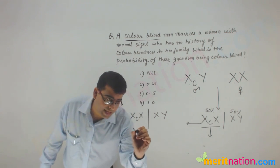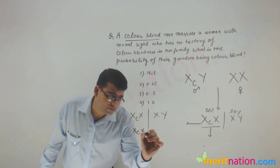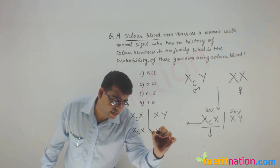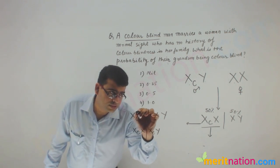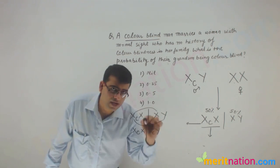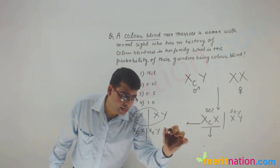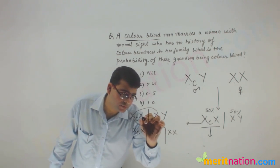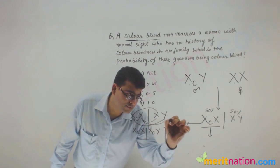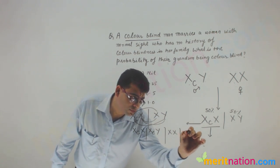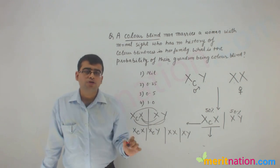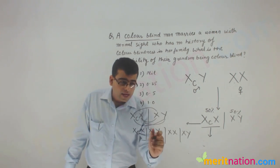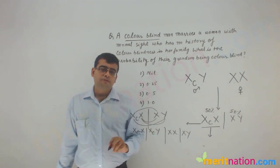We will get XcX, XcY, just do this - XcX, XcY, XX and XY. So there will be possibility of two grandsons, and out of that 50% will be colorblind. That is this.